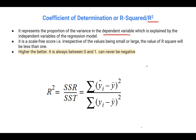Now a distinction between R, which was the correlation coefficient, and R-squared: with the correlation coefficient, we use this to identify the pattern or the relationship in our model. With R-squared, we use this to identify the strength of our model.